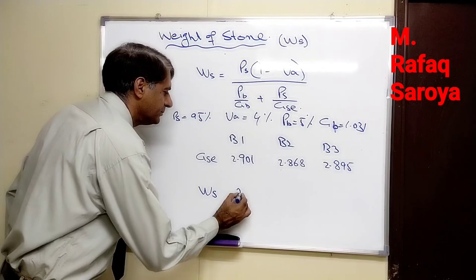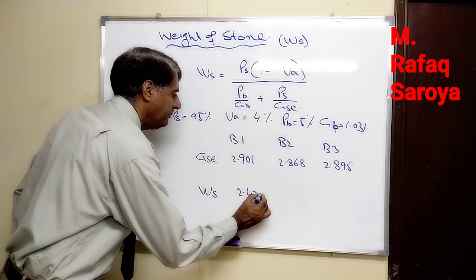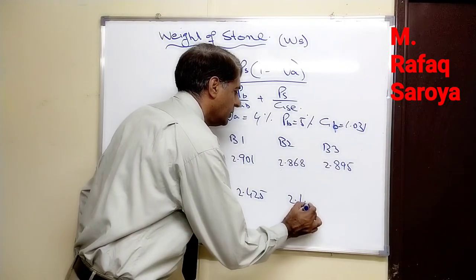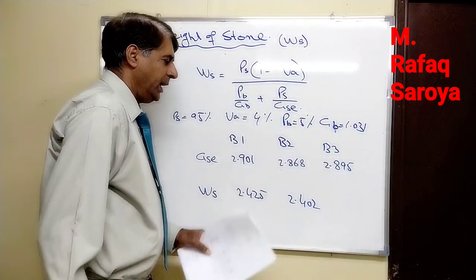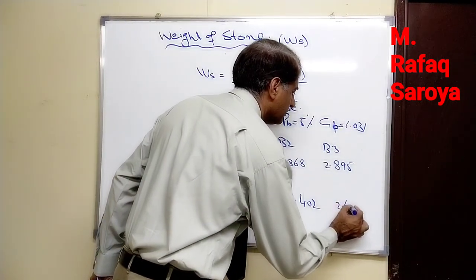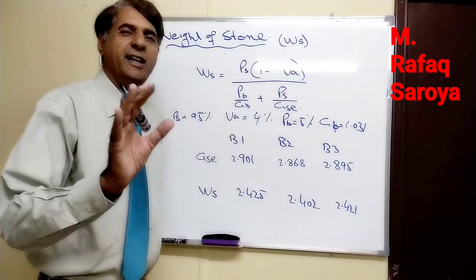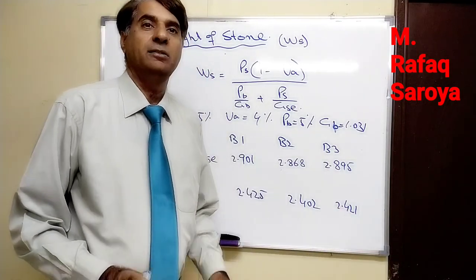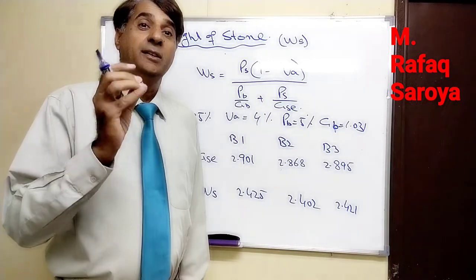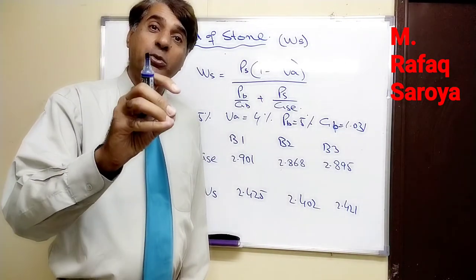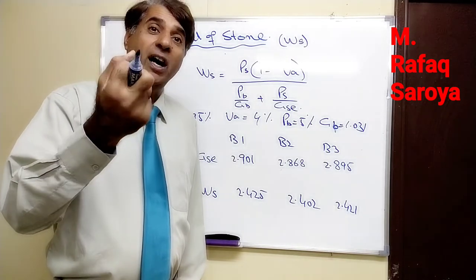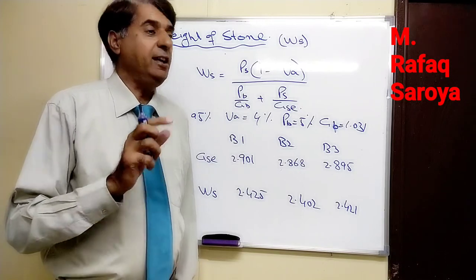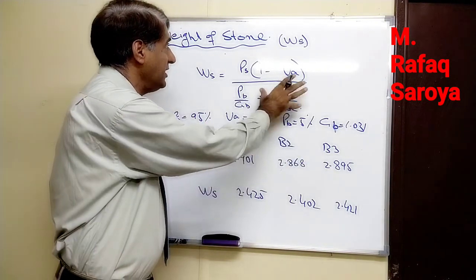Ws is 2.425, 2.402, and 2.421. As I have already told you, these are the values which I am writing directly in order to save time. Please, I would like to request if you are seeing this, if you want to have your strong grip in Superpave mix design, you should make these values yourself.